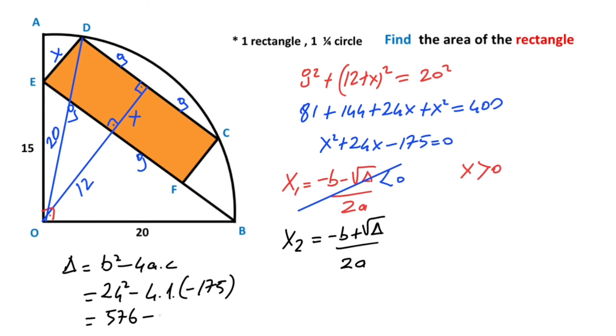It means delta equals 576 plus 700, so 1276. Second root equals minus 24 plus root 1276 over 2. You know that 1276 equals...